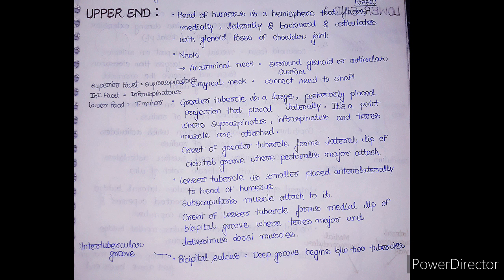The greater tubercle is a large posterior projection situated laterally. It is a point where many muscles attach. It has three facets: the superior facet, inferior facet, and lower facet. On the superior facet, the supraspinatus muscle attaches; on the inferior facet, the infraspinatus muscle attaches; and on the lower facet, the teres minor muscle attaches. A helpful mnemonic: superior → supraspinatus, inferior → infraspinatus, and the lower facet is for teres minor.